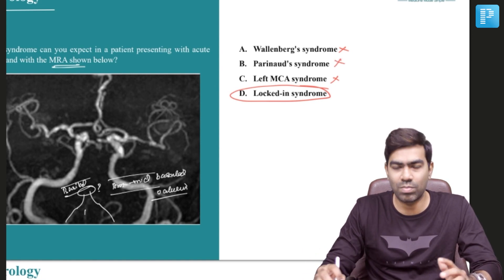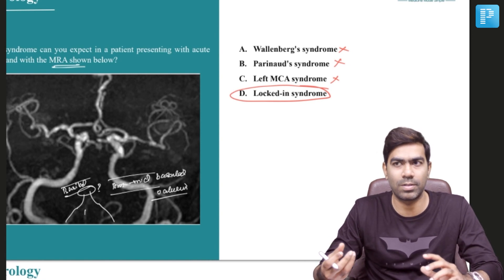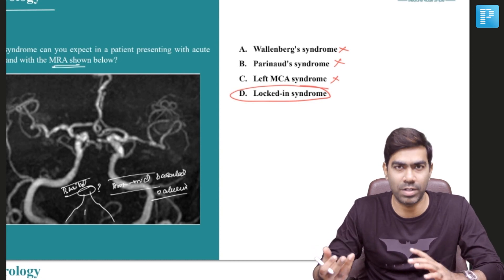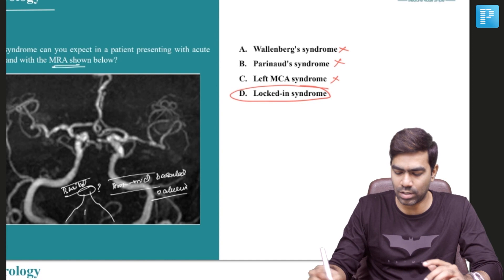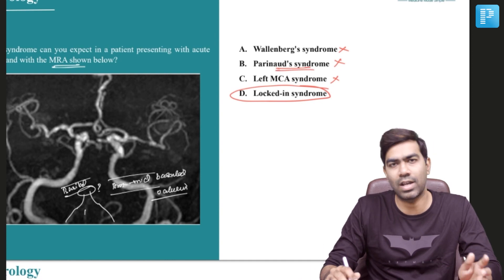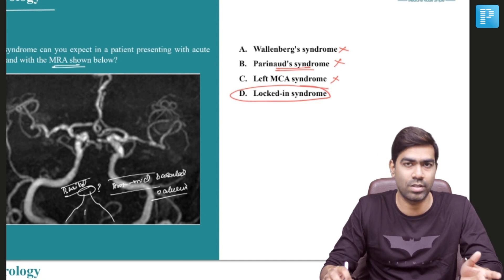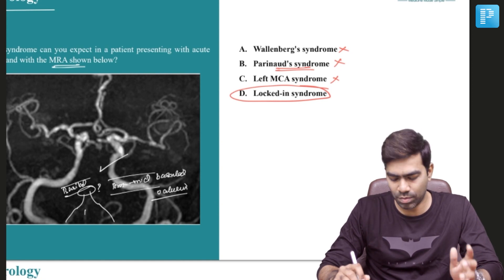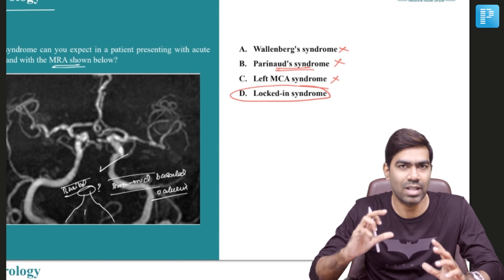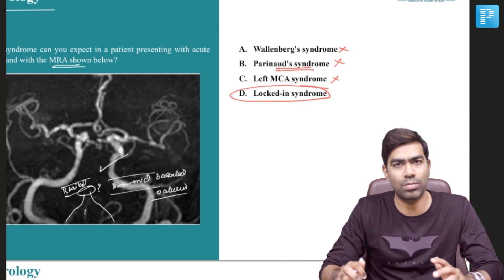Parinaud syndrome usually results because of some tumor posterior to the midbrain, especially a pinealoma, that can compress the dorsal aspect of the midbrain. Very rarely, a top-of-basilar artery infarction can also give a Parinaud syndrome-like picture. But clearly it's not a top-of-basilar artery occlusion, because with top-of-basilar occlusion you would see some segment of the basilar artery — none of the basilar artery is visible here.